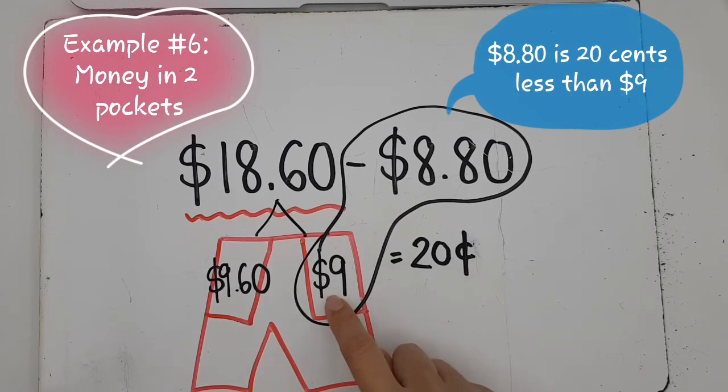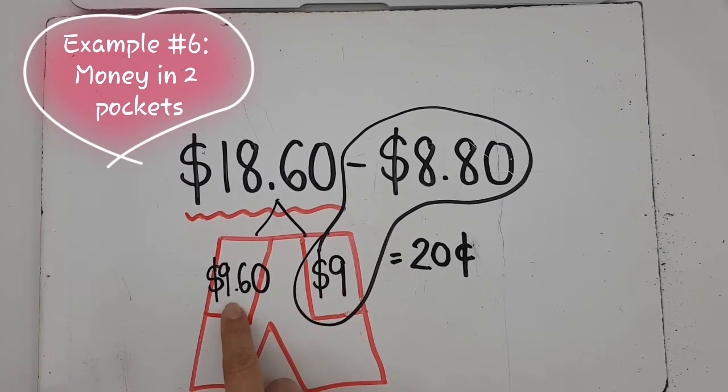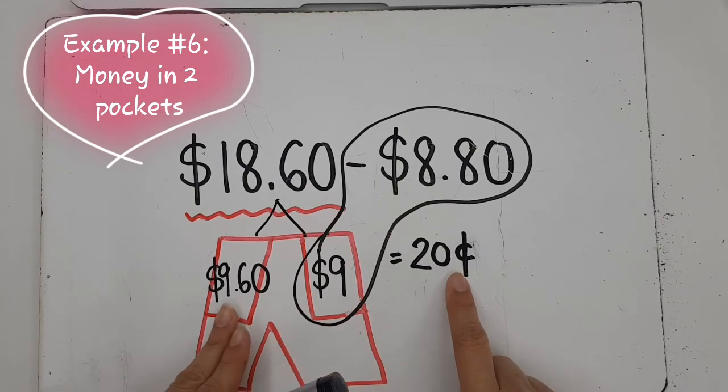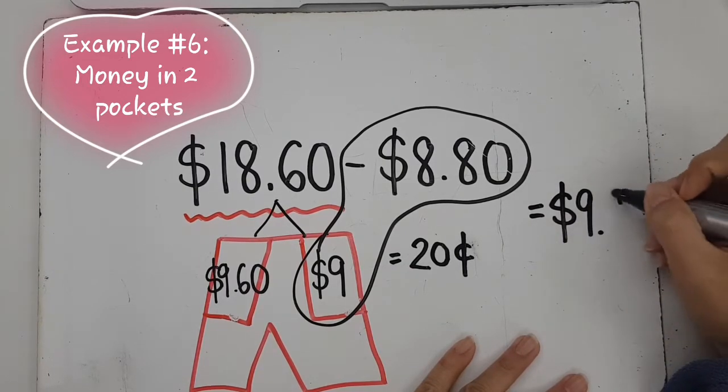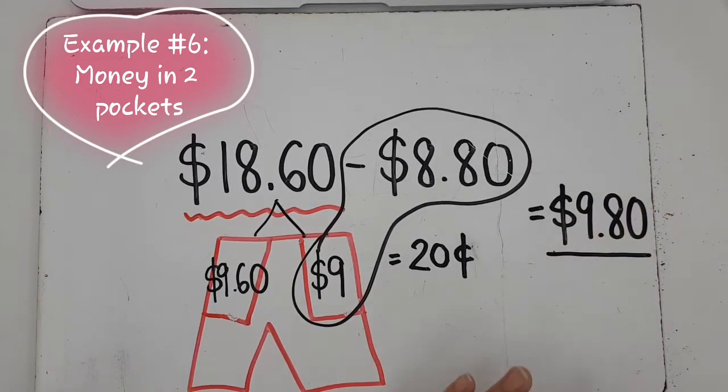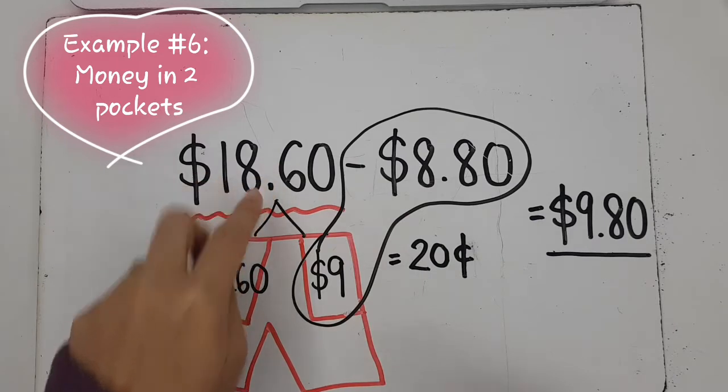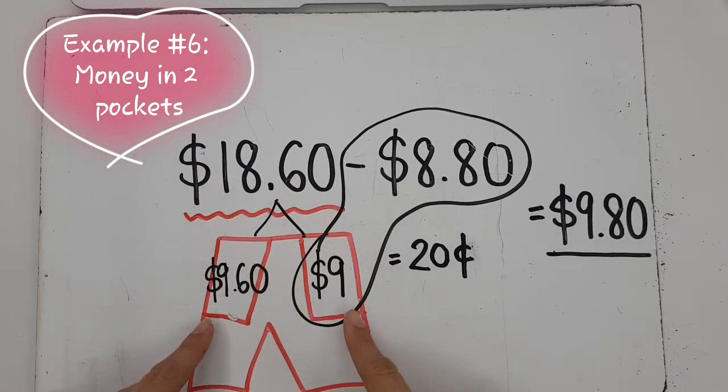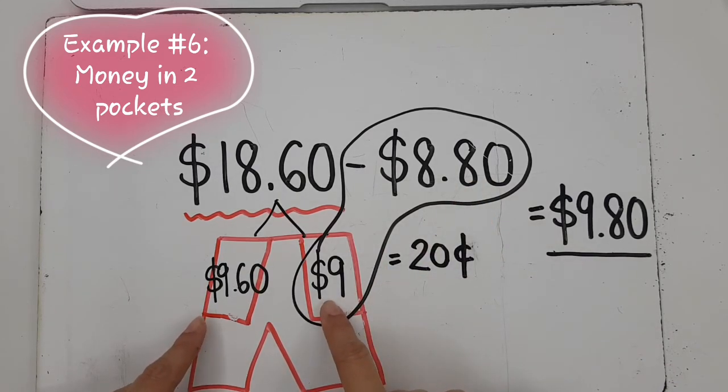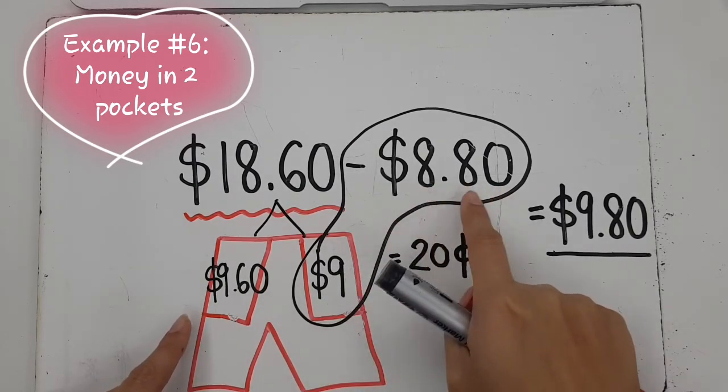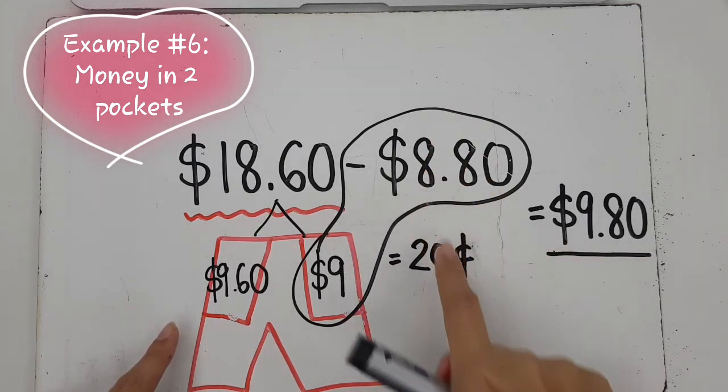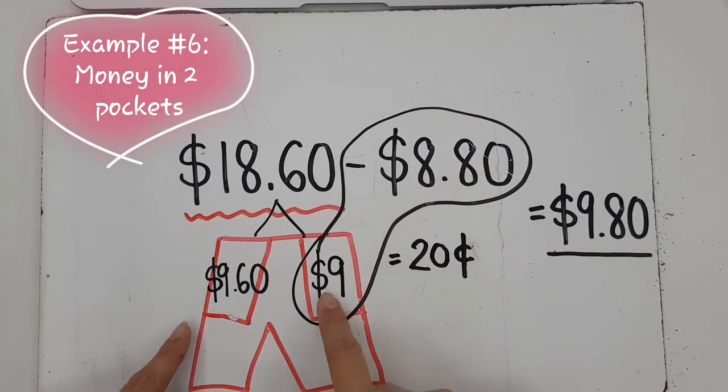So I have $0.20 left in this pocket. But don't forget, this pocket I did not touch. So how much money do I have all together? $9.60 plus $0.20, that will give me, the answer would be $9.80. Some of you might like this. We are actually choosing the nearest dollar to take it out from. Just think of it as splitting your money between two pockets. And I'm going to take away the $8.80 from this one because it's easy. And I always choose the easy number. Which whole number is nearest to $8.80? That would be $9. Because if I add another $0.20, it would be $9. So I'm going to put $9 in this pocket.